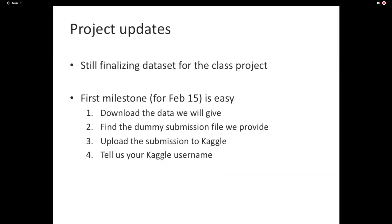There's an update about the class project. We haven't finalized the data set yet, but there's a milestone on February 16th, and it's perhaps the simplest thing you'll do all semester. We'll give you a data set and instructions. You download the data set, create a Kaggle account if you don't have one, unzip the file we give you, pick one file, upload it to Kaggle. Kaggle will report a number. On Canvas, tell us that number and your Kaggle username. This is mostly to get the workflow going — it's really minimal effort, but can have a big impact.